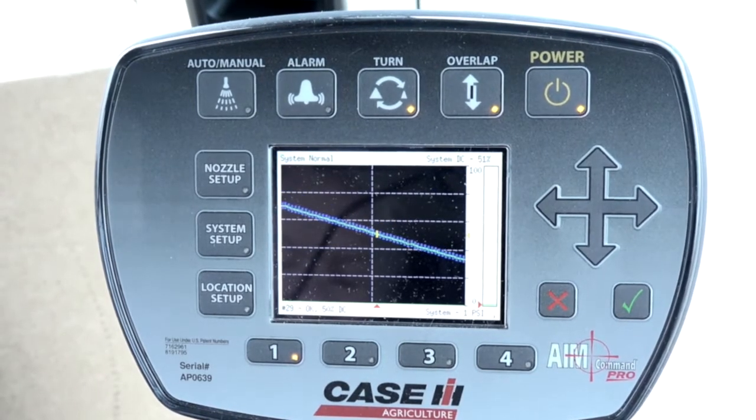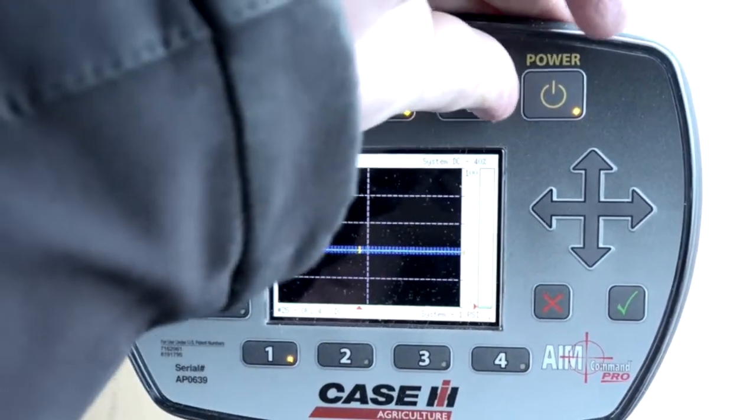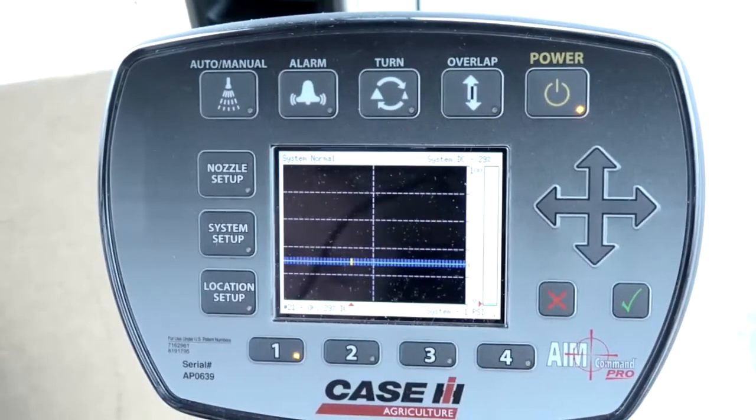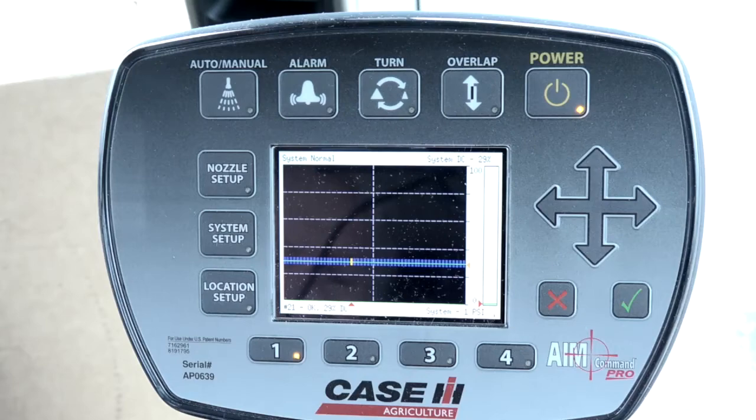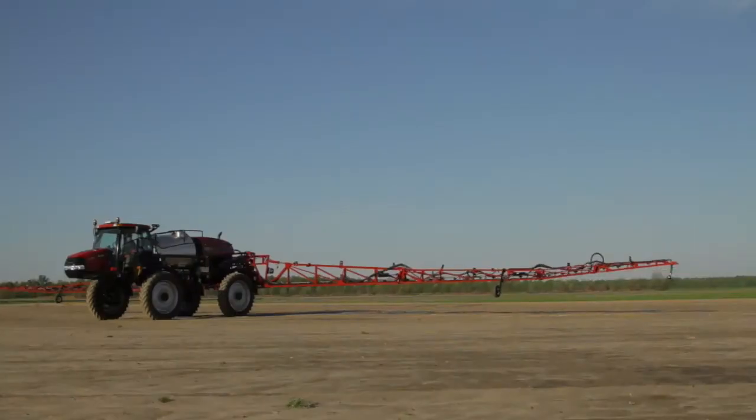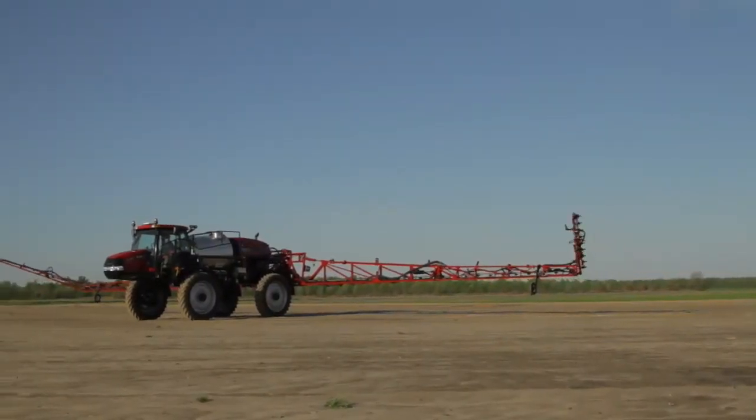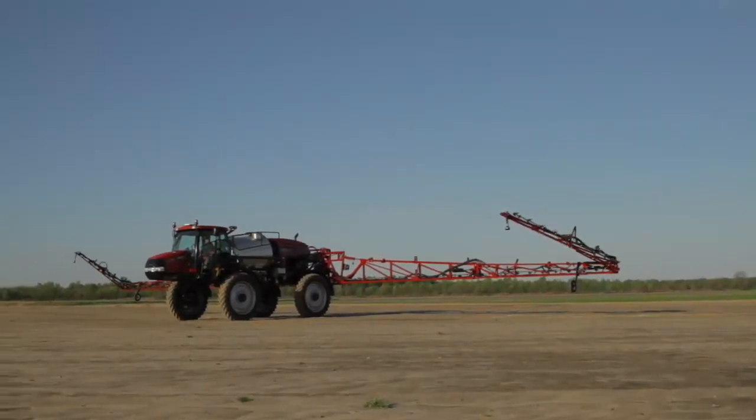Any time that a field is finished, we should shut off overlap and turn compensation. With these two features turned on, the maps will continuously run and AIM Command Pro and the ProView display will reach a finite limit where this will start to cause an issue. So we should always remember any time we leave a field to turn off overlap and turn compensation.